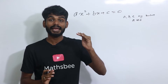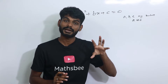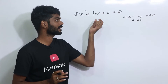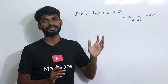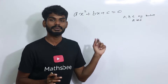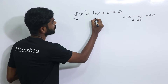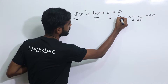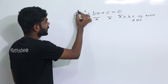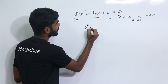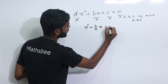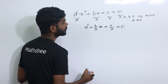So we are going to derive the quadratic formula. First, we divide through by 'a', so we get x squared plus b by a into x plus c by a equal to zero.